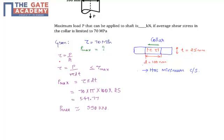Now we know that given us the average shear stress in the collar is 70 MPa. We have to find the maximum load. We know that the stress is the ratio of load to area. So here the area being π·d·t, the stress will be equal to P by π·d·t. It has to be less than or equal to the maximum shear stress that the collar can withstand.